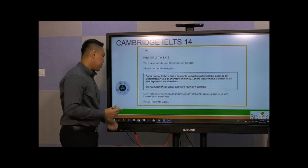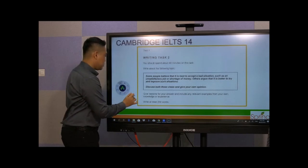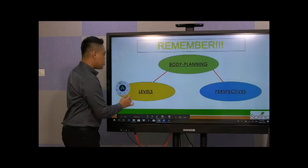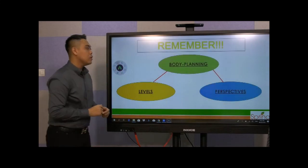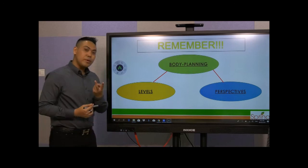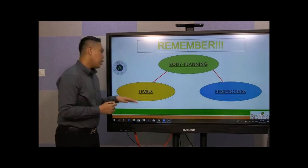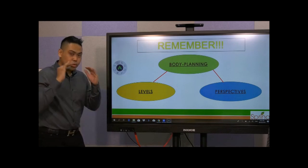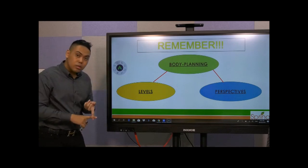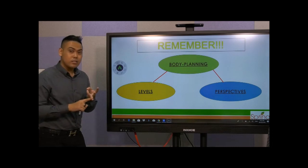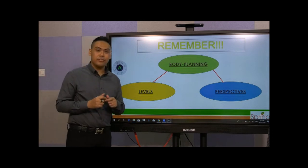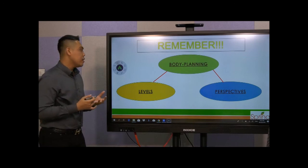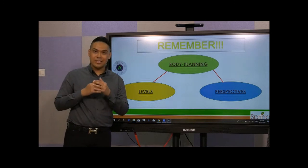So with that said, I just need you to remember the two main parts of body planning. First would be to consider the levels — the standpoint — which are individual, organisational, and societal and national. Second are the perspectives, of which there are about eight to ten that you can adopt. That's all for today. I'll see you in the next lesson.